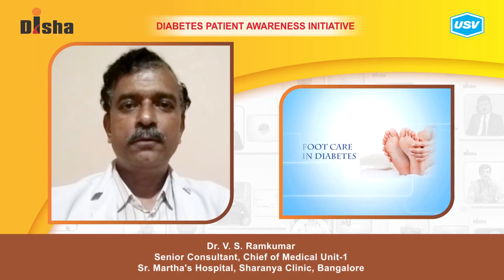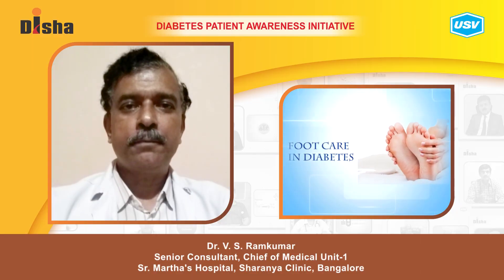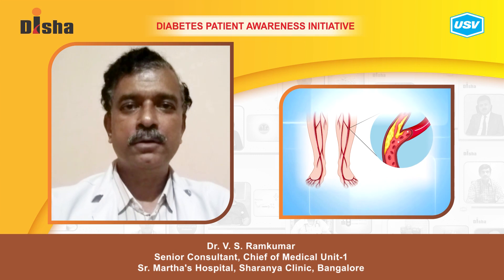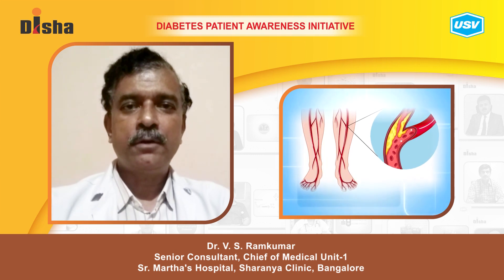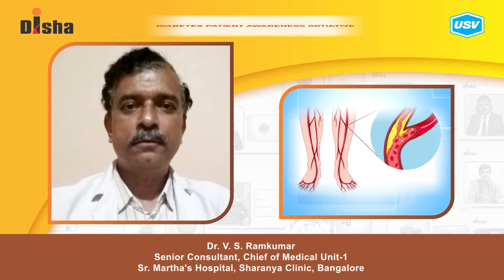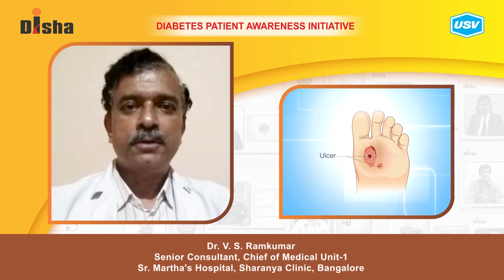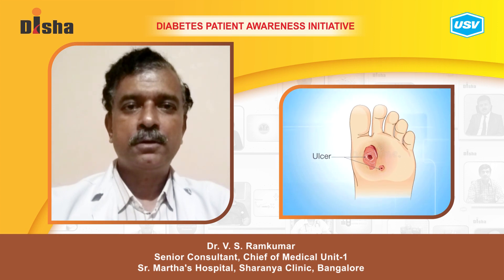Let us try to learn a few facts about peripheral vascular disease in diabetes. This is a condition where there is reduced blood supply to the extremities, especially the leg or the foot. The patient experiences pain while walking in the calf or thigh region, a symptom called intermittent claudication.